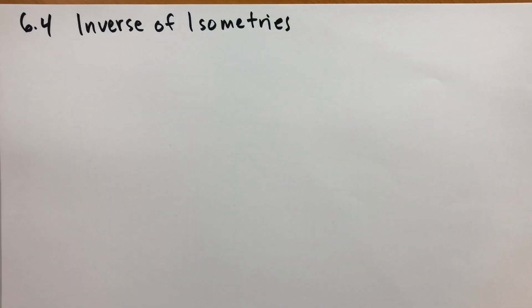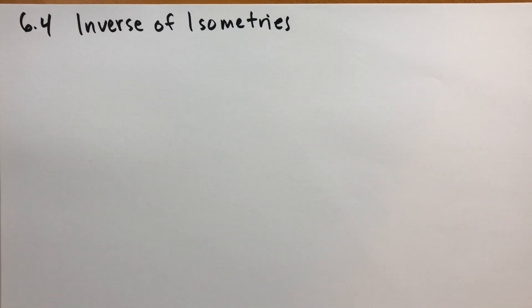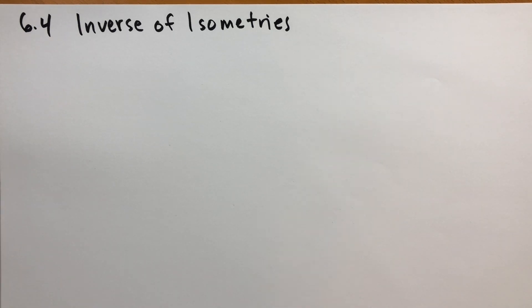Hello everybody, welcome back. This is Jonathan Gardner continuing Sergey Lange's Basic Mathematics chapter 6, which has to do with congruence, and section 4, which has to do with the inverse of isometries.